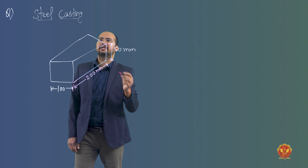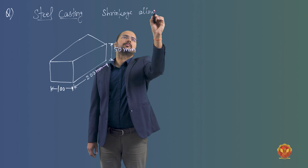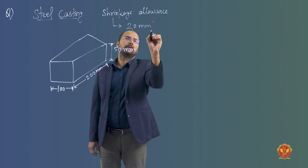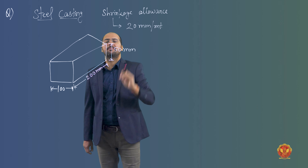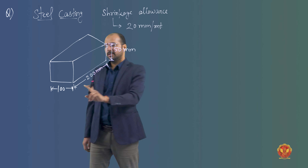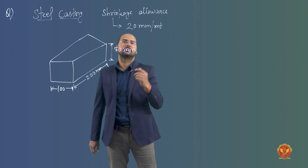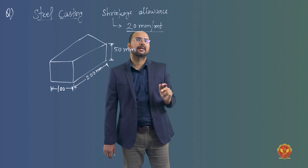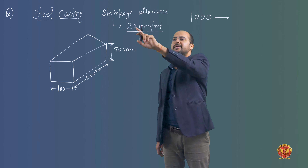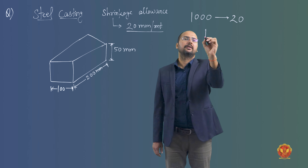For steel casting, the shrinkage value is 20 mm per 1000 mm. So in 1000 mm, steel shrinks by 20 mm. If we find out the shrinkage for 1 mm, we can scale it to any dimension.